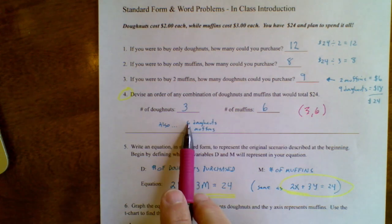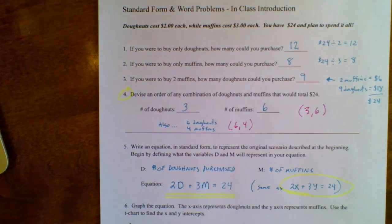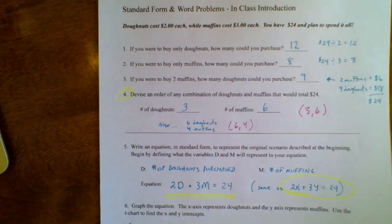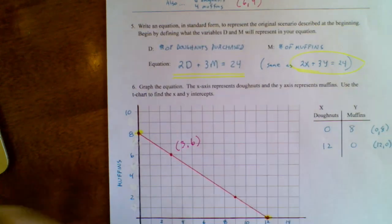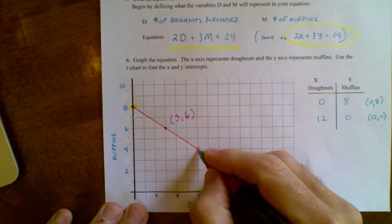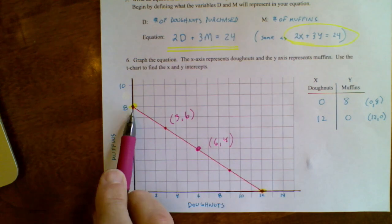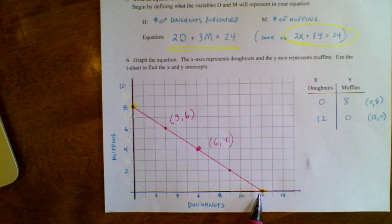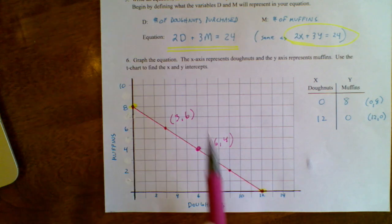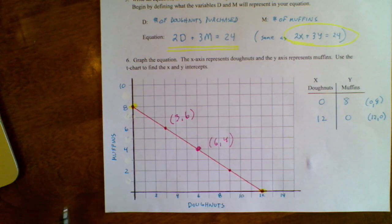I also said you could have purchased 6 donuts and 4 muffins, which would be the ordered pair 6 comma 4. That should show up on our graph, and if I go down here to my graph, the ordered pair 6 comma 4 is right on that graph. Any ordered pair on that line gives me a solution to the equation 2d plus 3m equals 24. Or, in reality, it gives me a combination of donuts and muffins that I could purchase to get exactly $24.